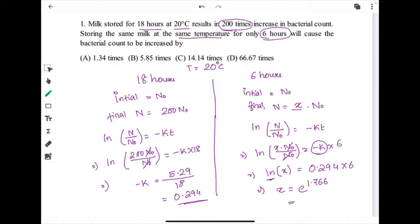That is 0.294 into 6 equals 1.766. So, the final answer we will get 5.848. This is our final answer. Answer B will be our correct answer.